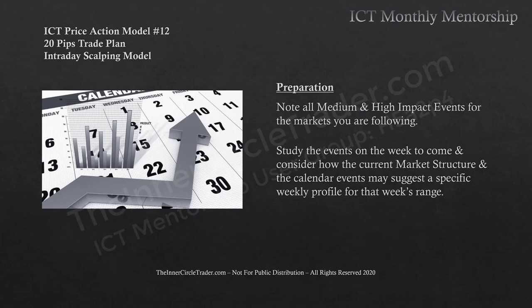Preparation involves noting all medium and high impact events for the markets you're following. Study the events for the week to come and consider how current market structure and calendar events may suggest a specific weekly profile — basically looking at weekly expansion. We're trying to find direction, not a specific price level or where the weekly close will be. We're trading inside a weekly bias that would expand more one-sided. All we need is to know which side is most likely to expand — higher or lower — before that weekly candle even starts trading.